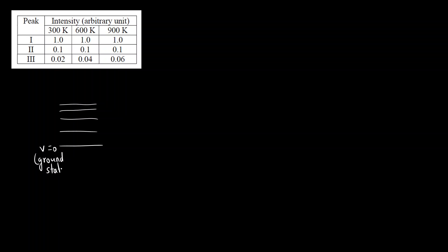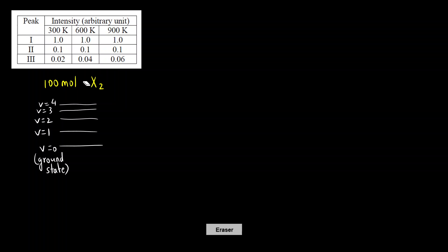So suppose the general energy level diagram for a vibrational spectrum looks like this. The energy spacing between the levels keeps on decreasing. This is V=0, the ground state, and the excited states are V=1, V=2, V=3, and so on.